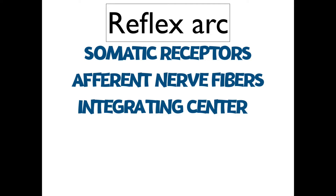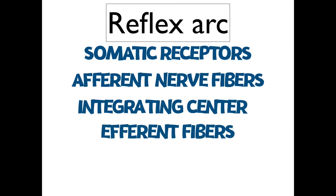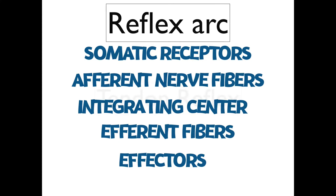Every time a signal enters the spinal cord through the posterior horn, it goes into what's called an integrating center, located in the gray matter. You'll see the spinal cord with two lateral horns and gray matter at the center. Then you have efferent fibers that exit the spinal cord — this is the signal integrated in the spinal cord now being sent out to the muscles. Finally, it reaches the effectors — the muscles themselves — which will either contract or receive an inhibitory signal to stay relaxed.